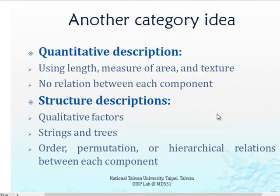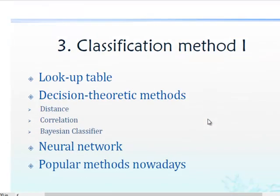Another idea is quantitative description using length, measure, area, and texture, and then finding out how they are relevant and whether there is any relation between each component. If there is no relation, we need to measure them in a different plane. Structure descriptions are basically quantity factors — strings and trees, order, combinations, or hierarchical relations between each component.